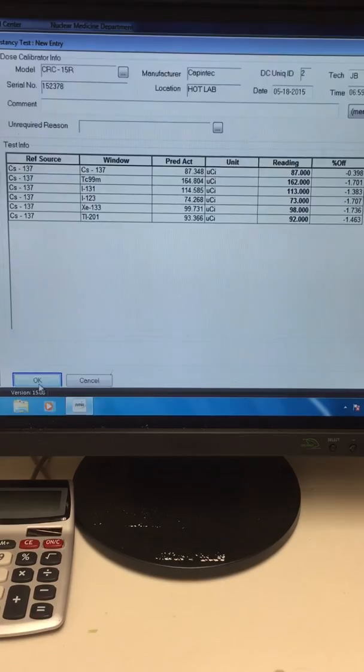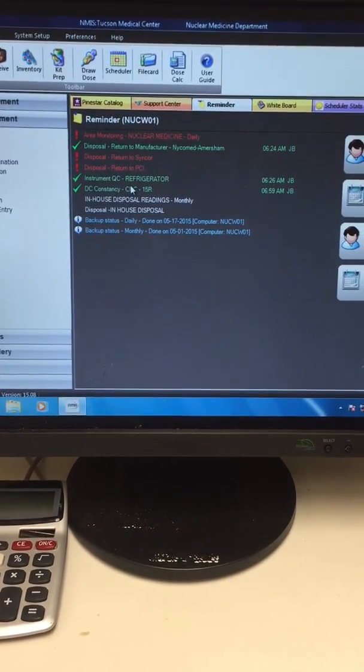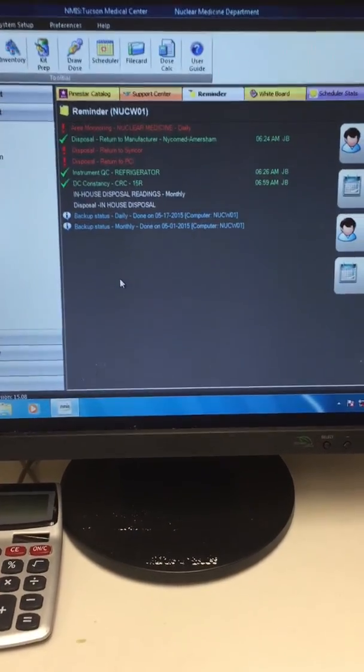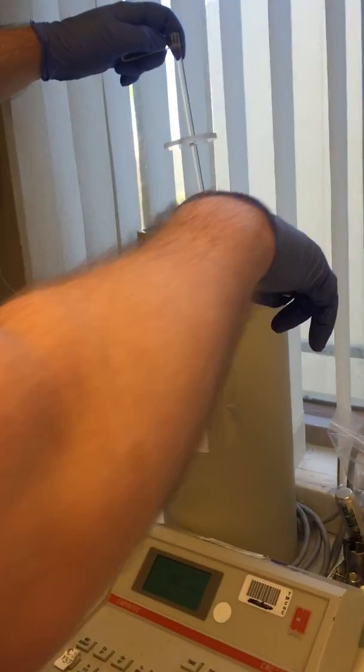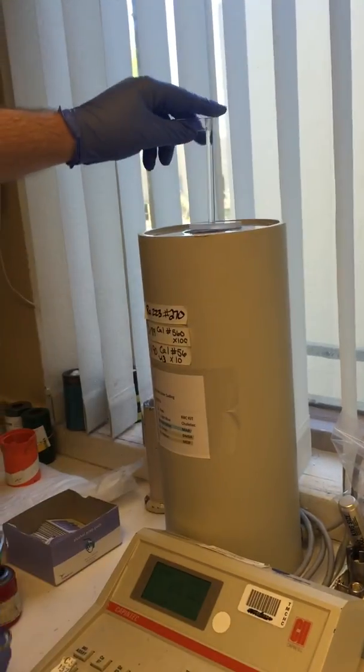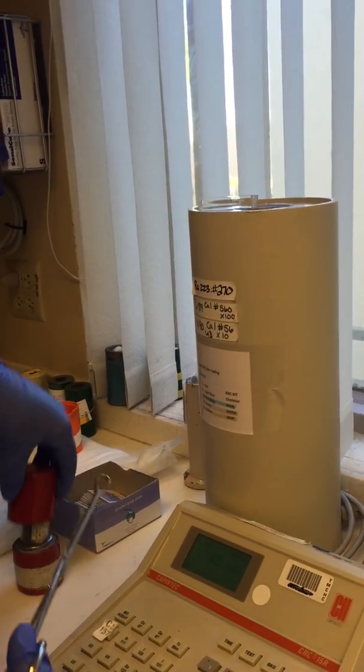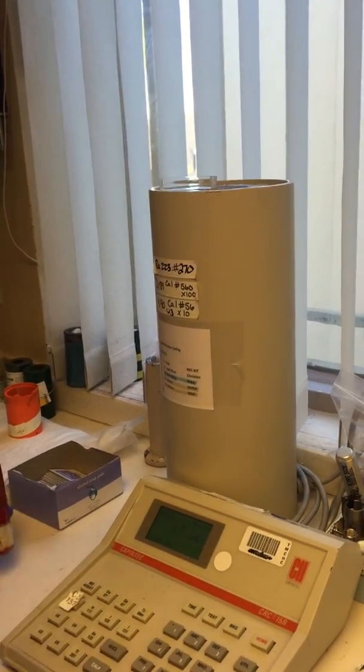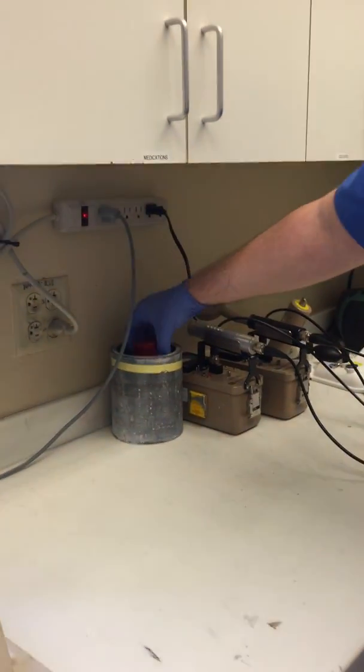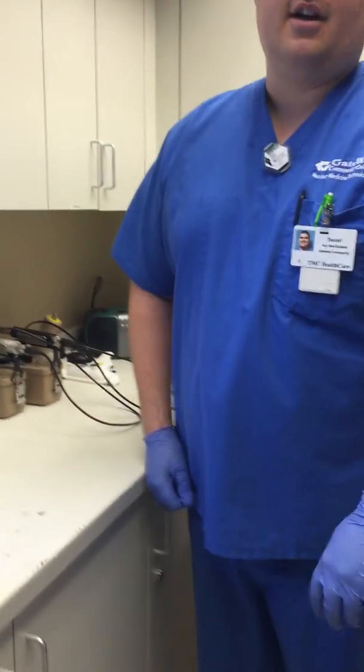So we're done with that. We're going to push okay. So that's green. So that's done. So now we're going to come over here. We're just going to put away our cesium source and put in this lead shield here. And then we're done with our constancy test.